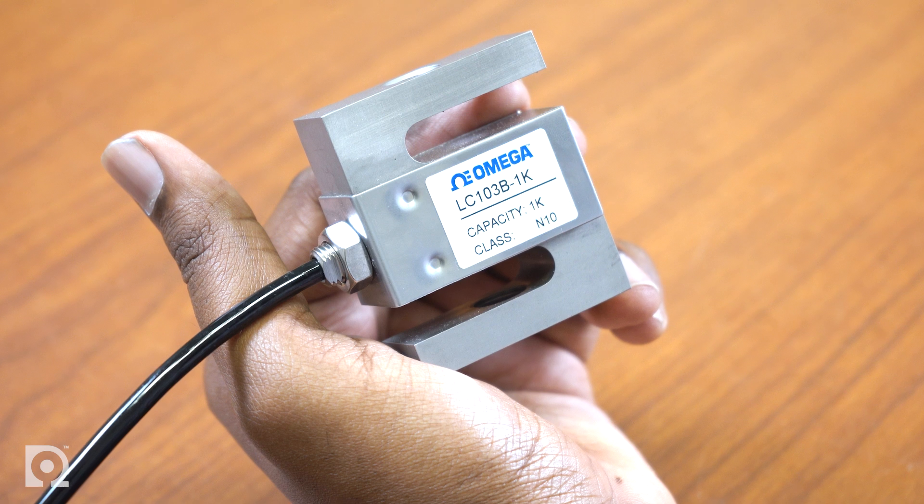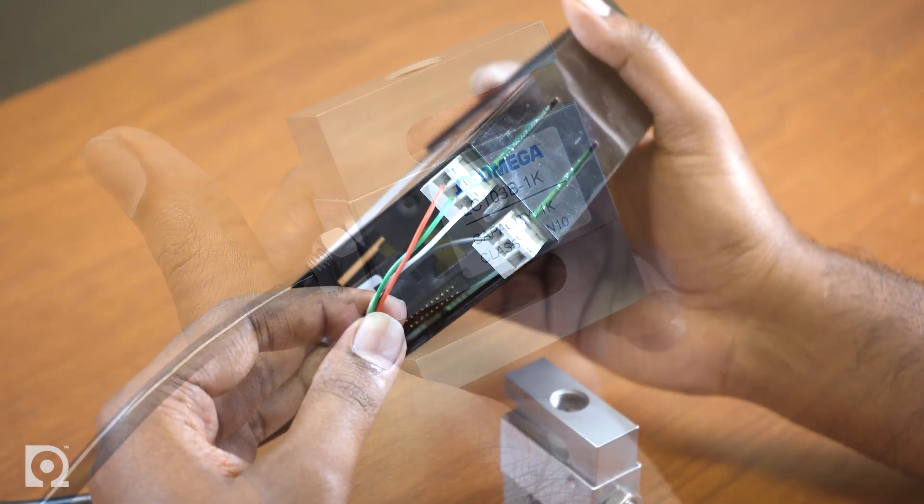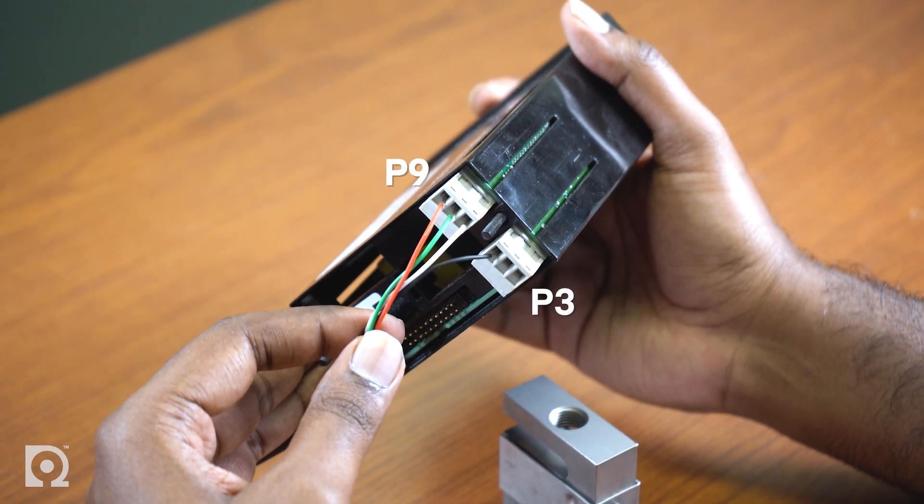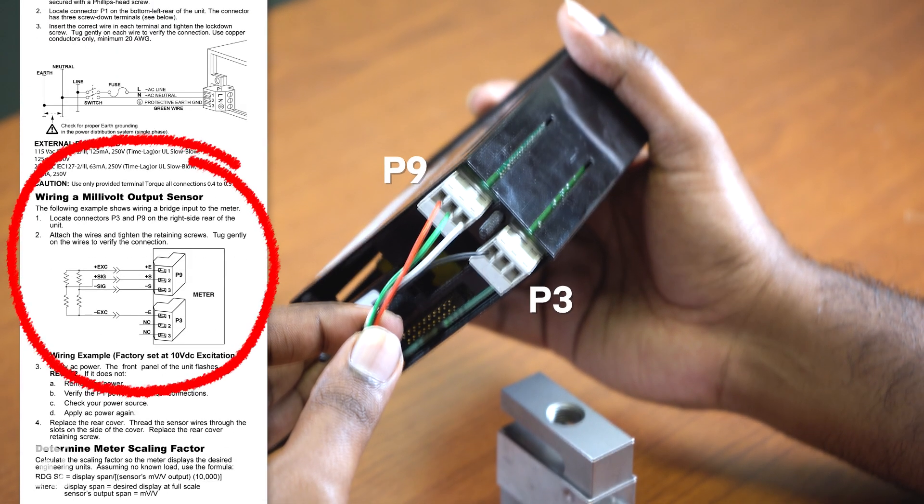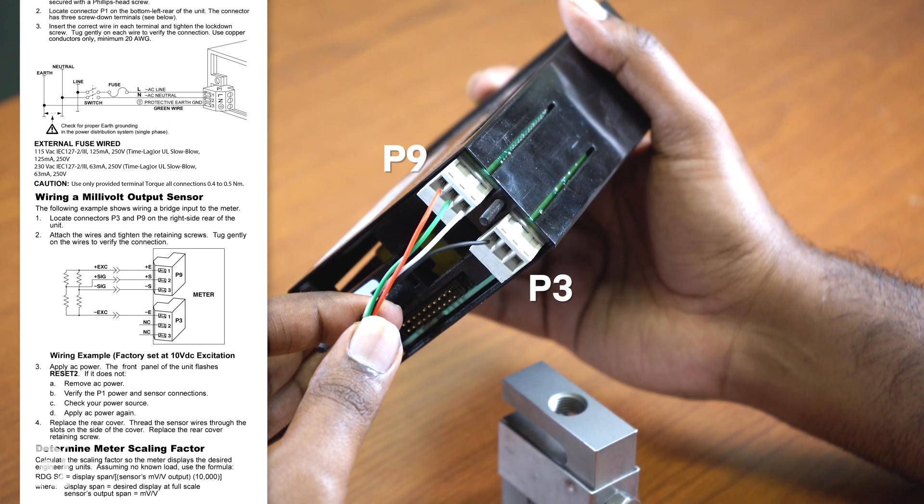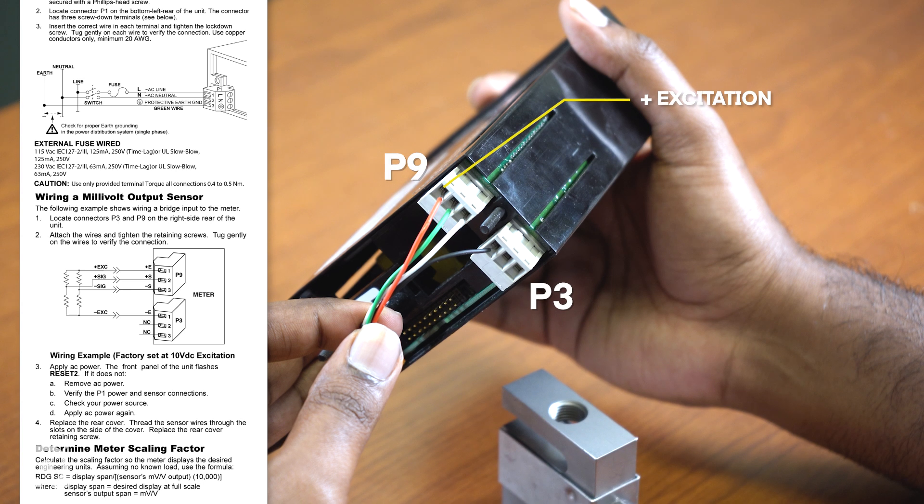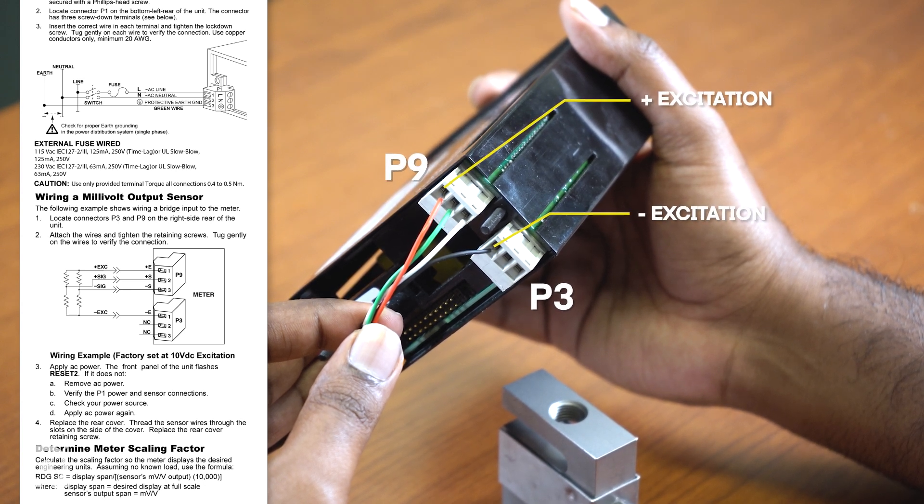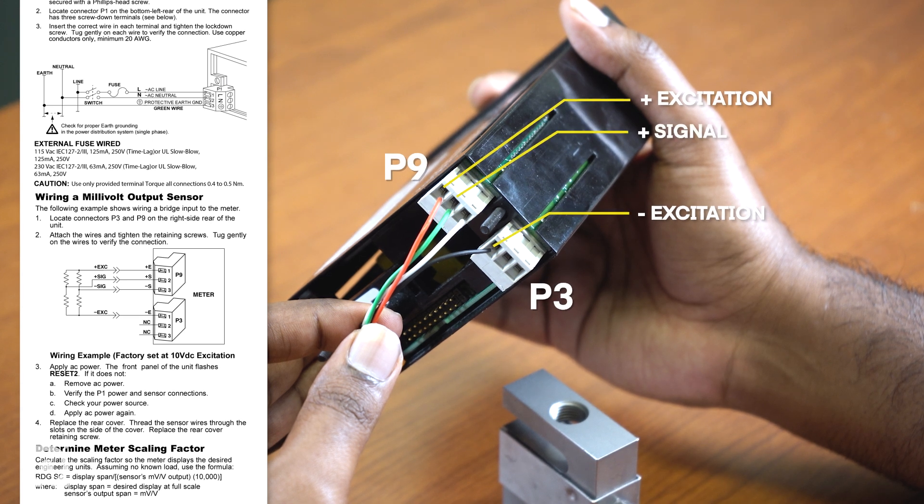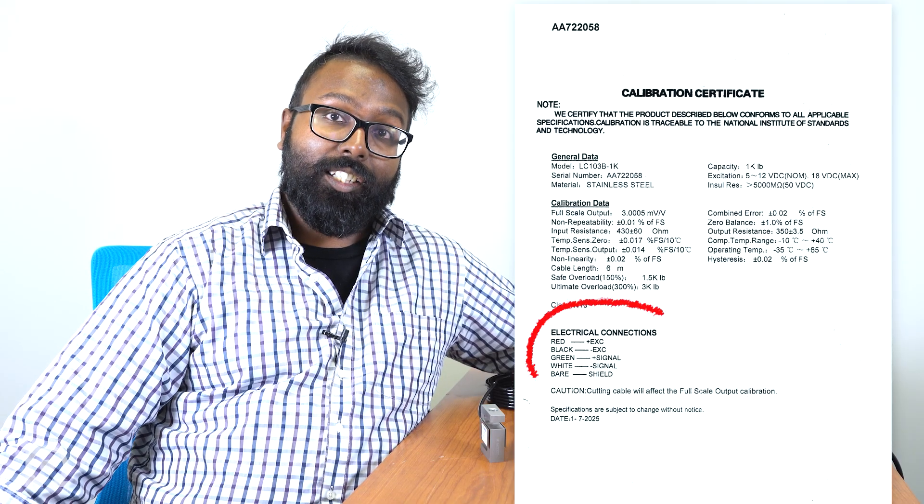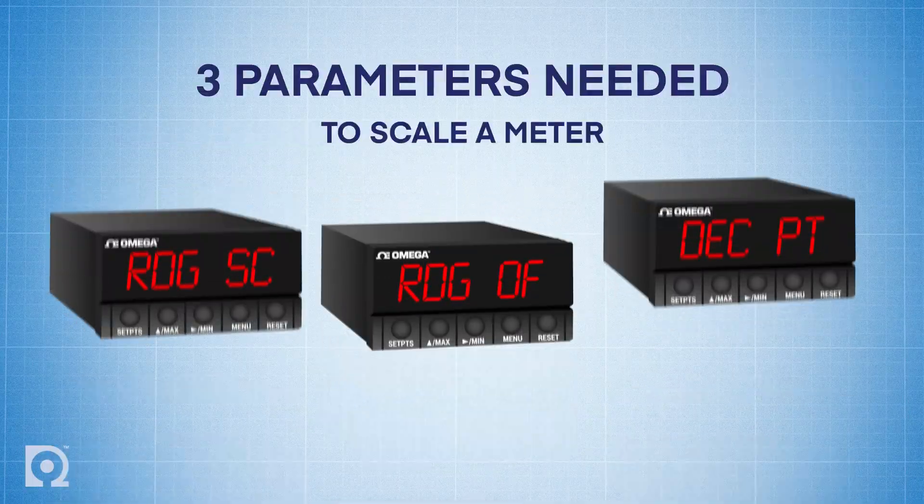To begin configuring this meter, make sure your load cell is connected to the meter. If you look at the back of the meter, you'll see two gray connectors, P3 and P9. You'll also find this on section 2 of the quick start manual. Your positive excitation will be connected to the first hole on terminal block P9 and your negative excitation will connect to the first hole on terminal block P3. Your positive signal will connect to the second hole on terminal block P9 and your negative signal will connect to the third hole on terminal block P9. To figure out your color codes for your negative and positive excitation and signals, refer to your calibration certificate.